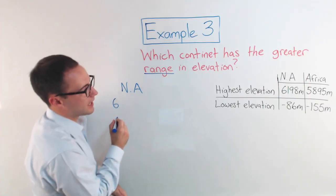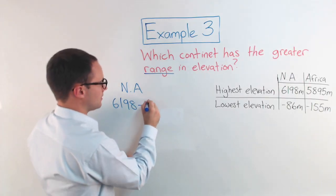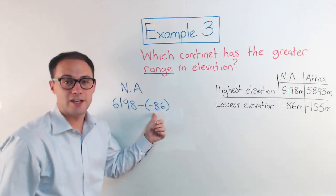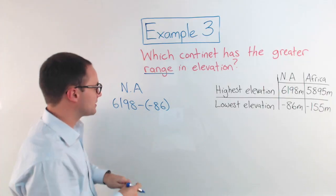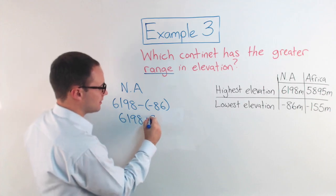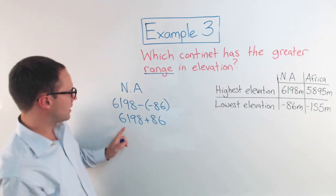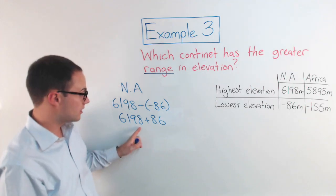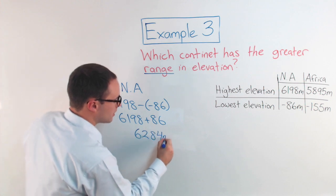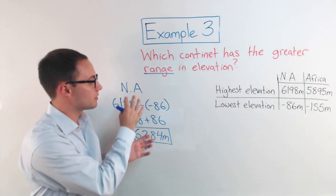We're going to do 6,198 minus negative 86. Subtracting an integer, the same thing as adding its opposite. So, we're going to change this to 6,198 plus 86, which would give me, let's see, if I take two away, that will make it 6,200. So, then I'll have 84 left. So, 6,284 meters. That's the range in elevation for North America.